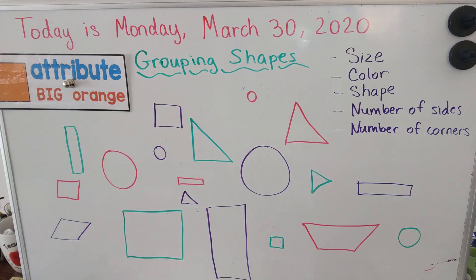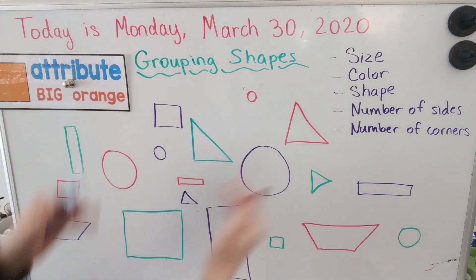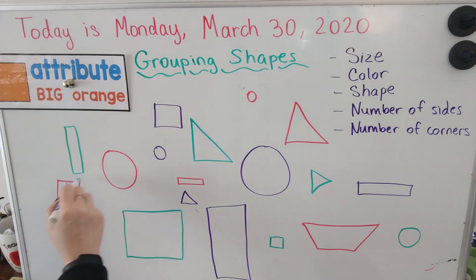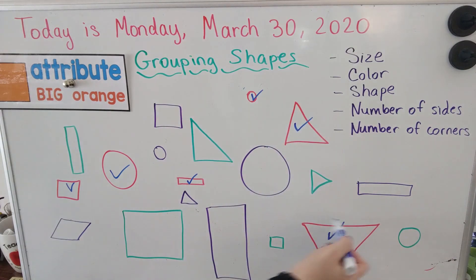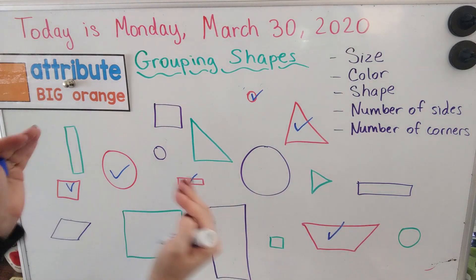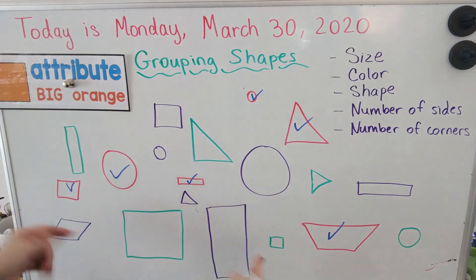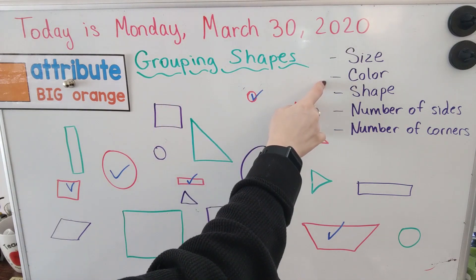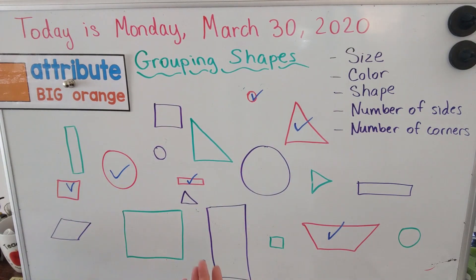Another way we can group them is by color. So if I wanted to make groups of color, I can say I'm going to put all of the red shapes in one group. Here are all of my red shapes — I would put them in one group. I would make another group of all the green shapes, all the purple shapes. So that is grouping the shapes by color.